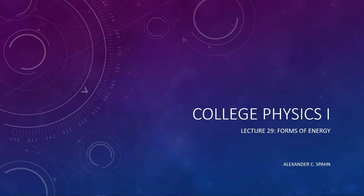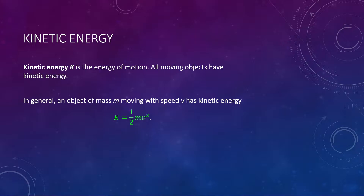Let's go in the same order that we followed in the last lecture. We're going to start with kinetic energy. Kinetic energy, given by a capital letter K, by definition is the energy of motion. In other words, if the object is moving, it has kinetic energy. This quantity depends both on the mass of the object, m, and the speed, v, at which it is moving. Notice it is heavily dependent on the speed, v, because that term in the equation is squared.